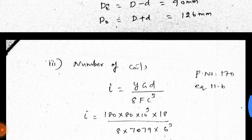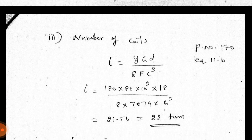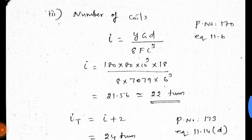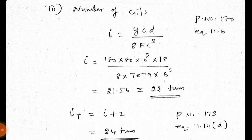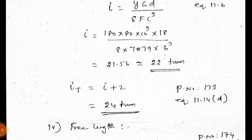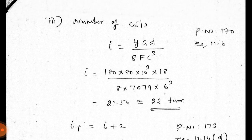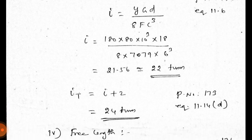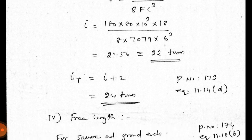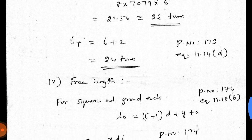The third step is the number of coils. The formula is: y × G × d / (8F × C³), from page 170, equation 11.6. Substituting all values gives the number of active coils i. The total number of coils is i + 2, from page 173, equation 11.14, giving 24 turns.